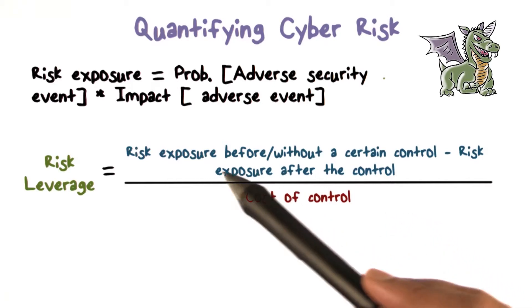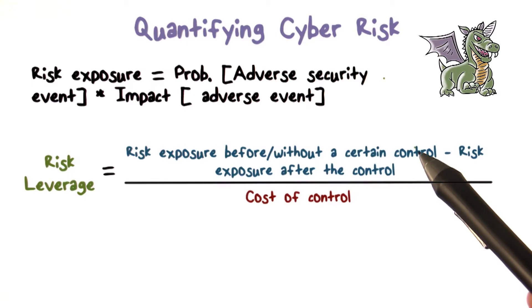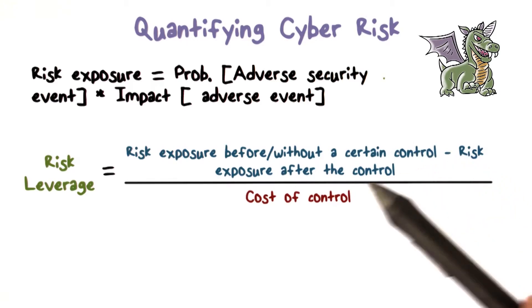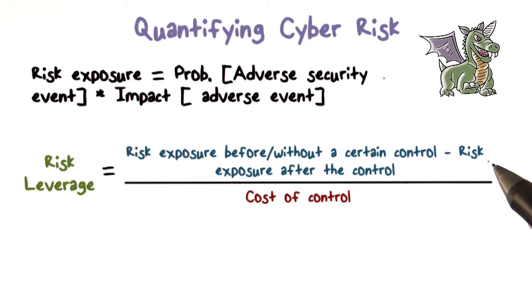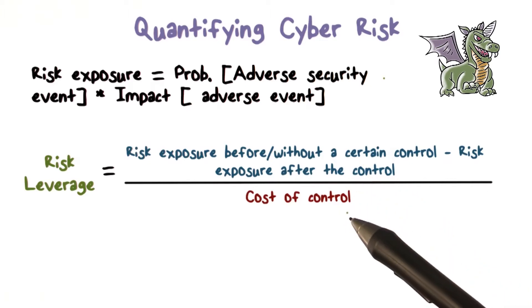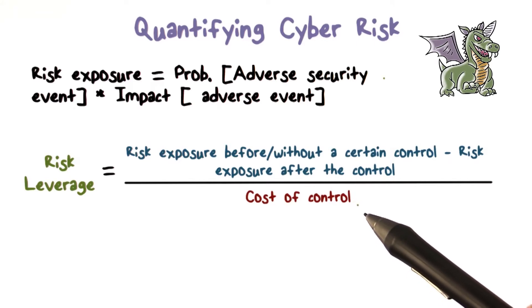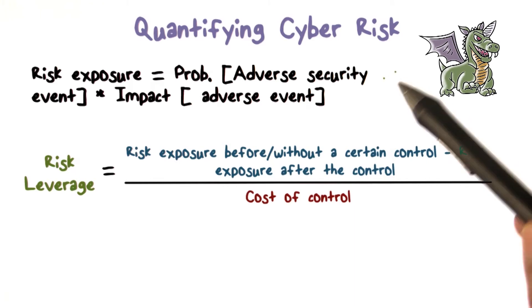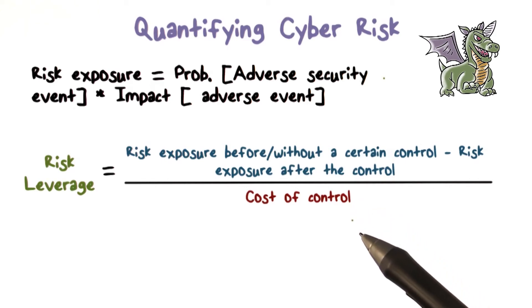When you put a control in place, you can ask what the risk leverage of that control is. The way to compute that is: what was my risk exposure before, or without the control under consideration, minus the risk exposure after this control is deployed. This difference is the amount by which risk is reduced because of this control. That's the decrease in risk divided by the cost of that control — the cost benefit analysis. Dividing the reduction in risk by the cost gives you the risk leverage.